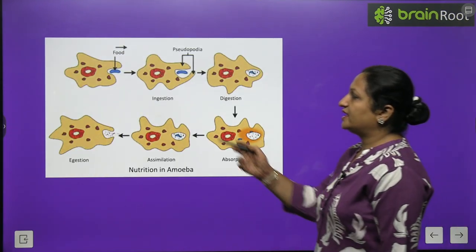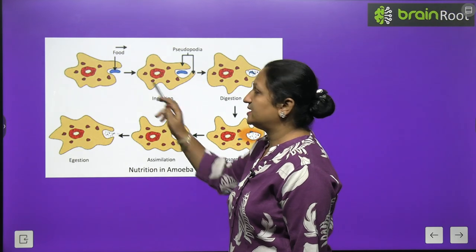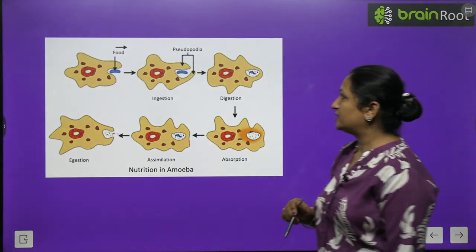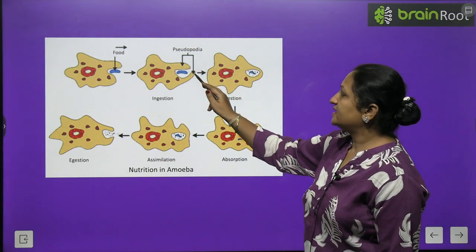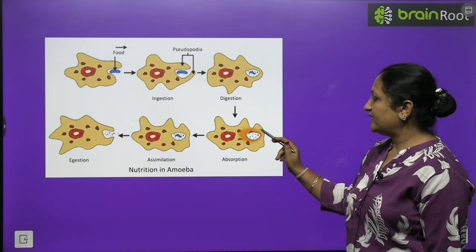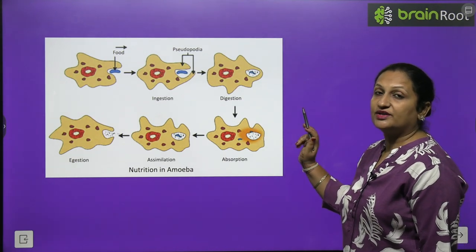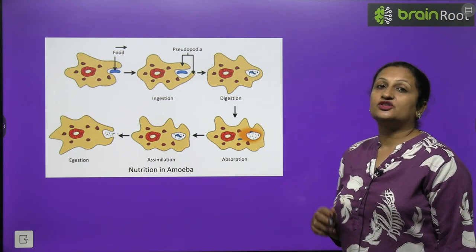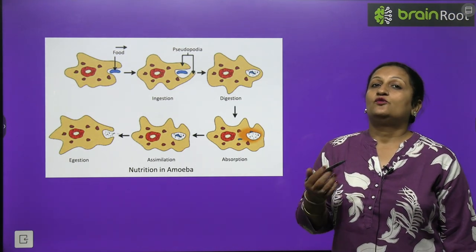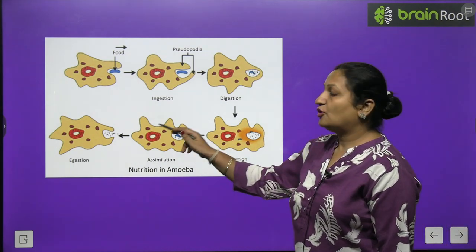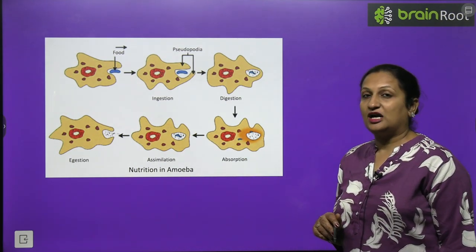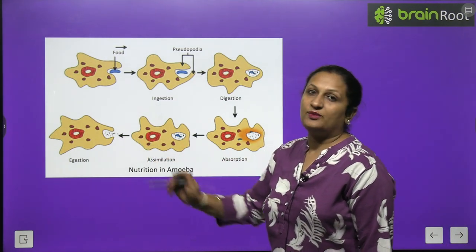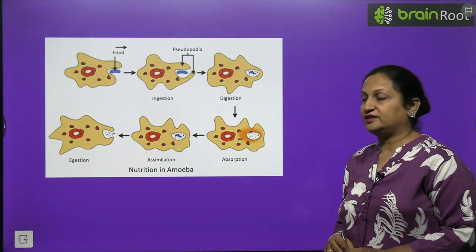So amoeba senses food, extends its pseudopodia — or false feet — surrounds the food and forms a vacuole. Inside the vacuole, digestive juices are secreted and digestion takes place. All the important substances are absorbed, then assimilated and distributed to where they are needed, and the undigested food is thrown out of the body.